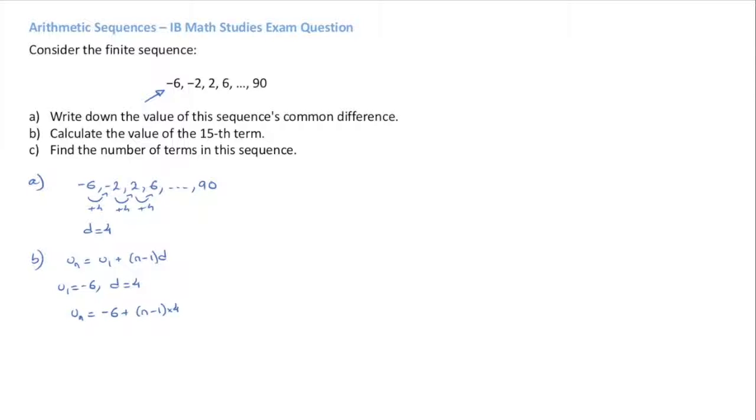That would be U15 equals negative 6 plus 15 minus 1 times 4, leading us to negative 6 plus 14 times 4, which is 56.